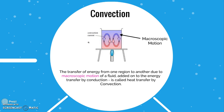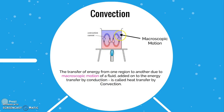Because of these convection currents, there is a transfer of energy from one region to another. This motion is macroscopic — we can observe the water molecules moving from the bottom upward and from the top downward. This observable macroscopic motion of a fluid transferring energy from one region to another is what we call convection heat transfer.